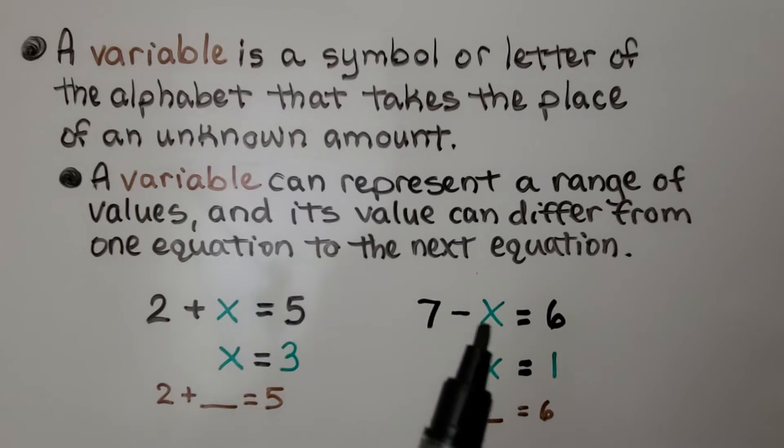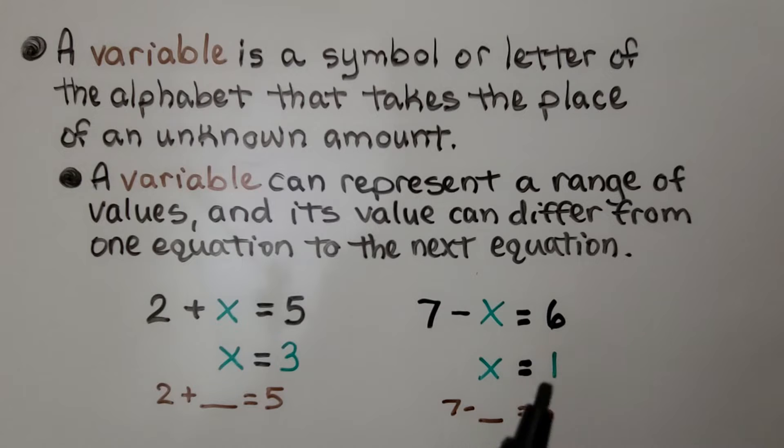Here we have 7 minus x is equal to 6. Well, x must be equal to 1 in this equation. It's like 7 minus blank equals 6. It's just taking the place of the unknown amount. In this equation it had to equal 3, but in this one it had to equal 1 in order for these to be true.